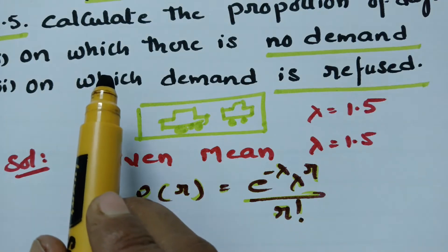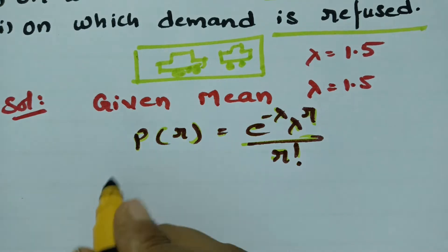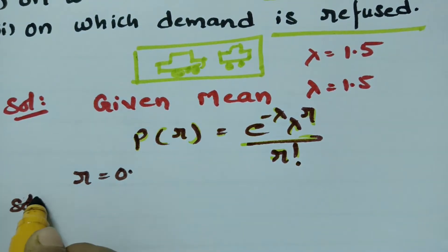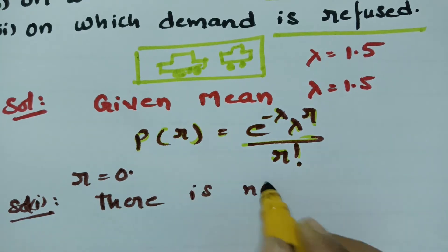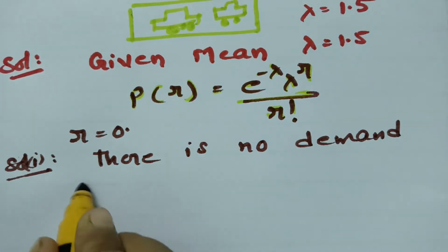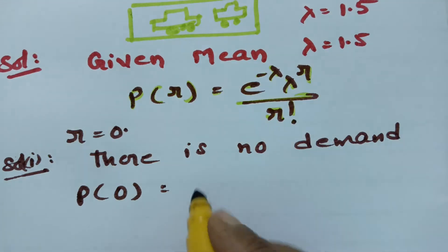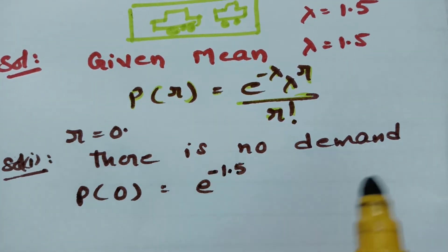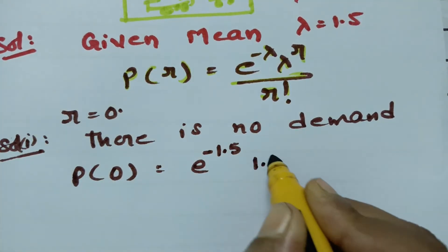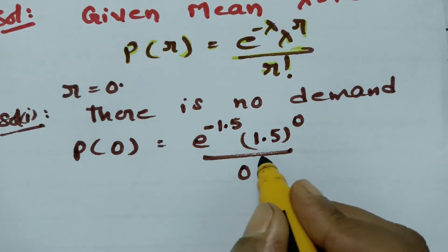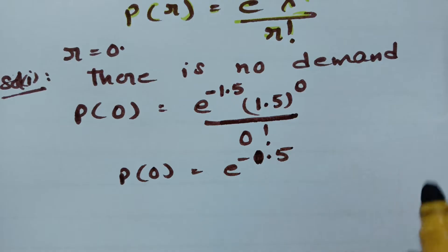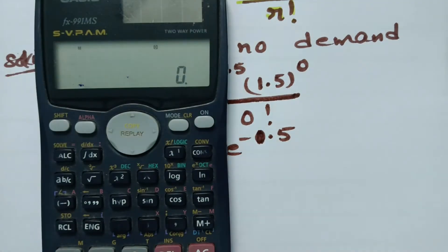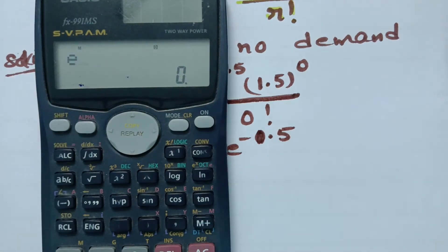We have to calculate the proportion of days on which there is no demand for cars. If there is no demand, we consider r equal to 0. Substituting into the formula: P(0) equals e to the power of minus lambda, with lambda equal to 1.5, 1.5 to the power 0, divided by 0 factorial. So this becomes e to the power of minus 1.5.